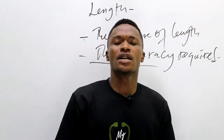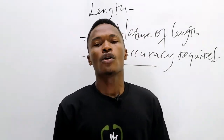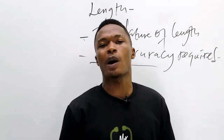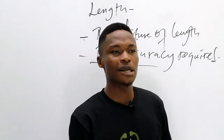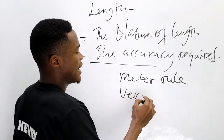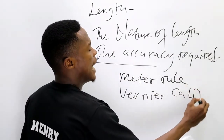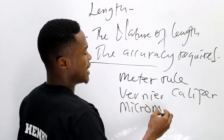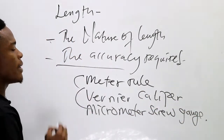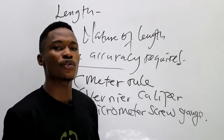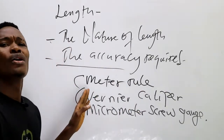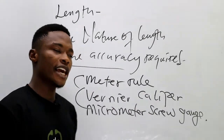Whenever we talk about accuracy required, instruments vary from one to another. The accuracy of an instrument simply means how close it can measure to the actual value. The instruments for measuring length include the meter rule, the vernier caliper, and the micrometer screw gauge. The vernier caliper and micrometer screw gauge are more accurate than the meter rule — they can measure what the meter rule cannot.